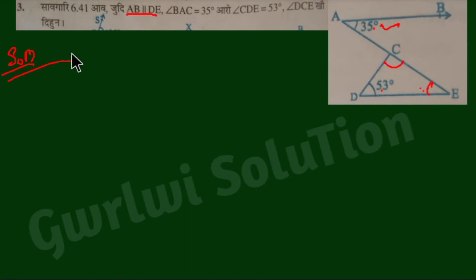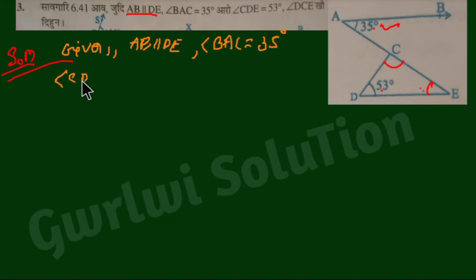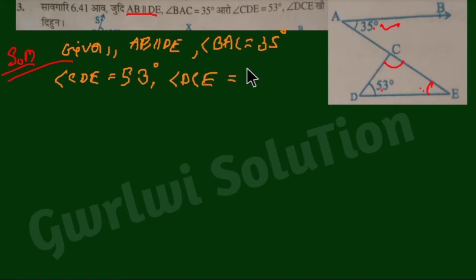First of all, we have been given that AB and DE are parallel. Angle BAC is equal to 35 degrees, and angle CDE is equal to 53 degrees. We need to find angle DCE.